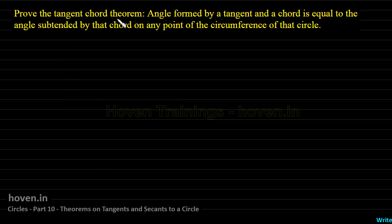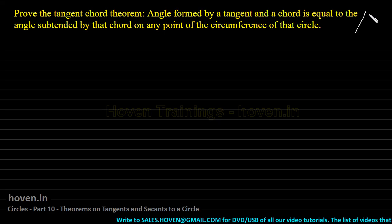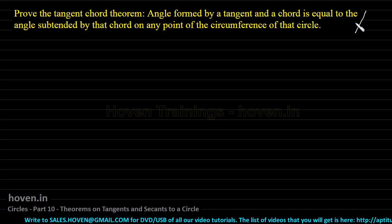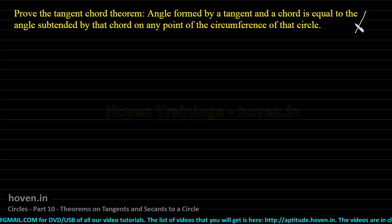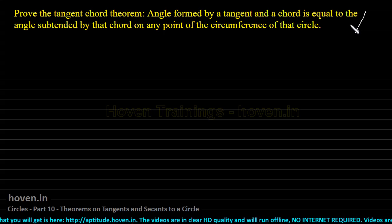Prove the Tangent Chord Theorem. The angle formed by a tangent and a chord is equal to the angle subtended by that chord on any point of the circumference of that circle. This theorem may not be a part of any exam as a subjective proof, but the logical steps, the result of this theorem, and questions based on it will always form a part of any question paper.